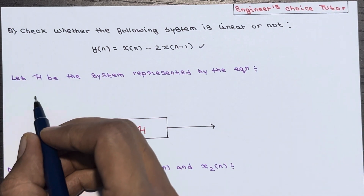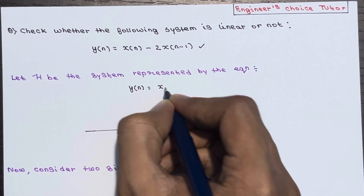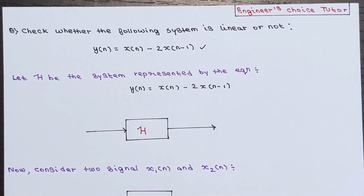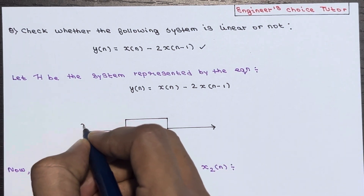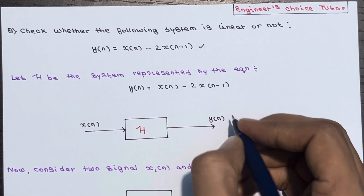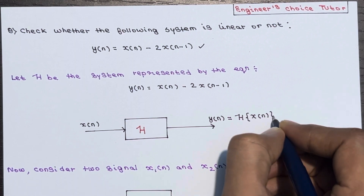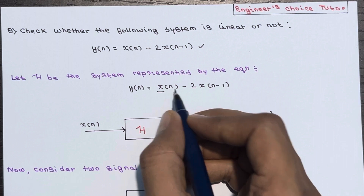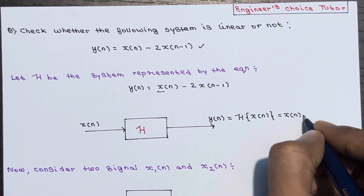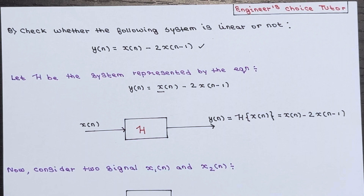Let h be the system represented by the equation y(n) = x(n-2) · x(n-1). In general, if you apply x(n) to a system h, then you will get y(n) as output, which is basically the transform of x(n). And here y(n) = x(n-2) · x(n-1).